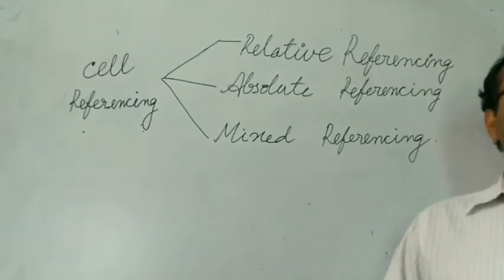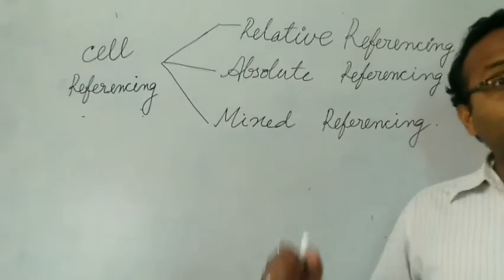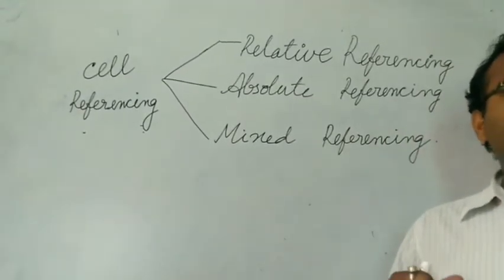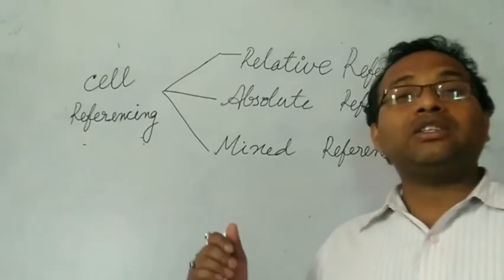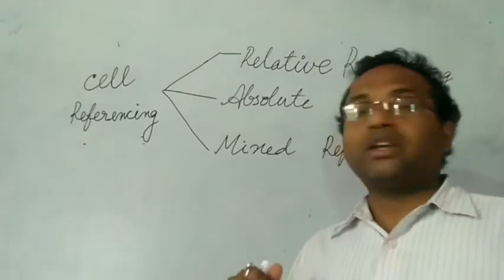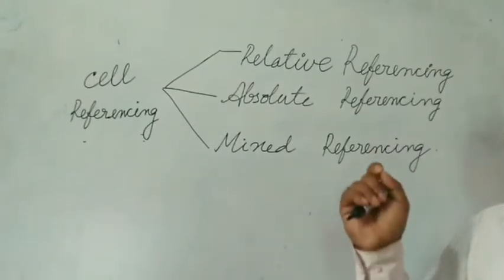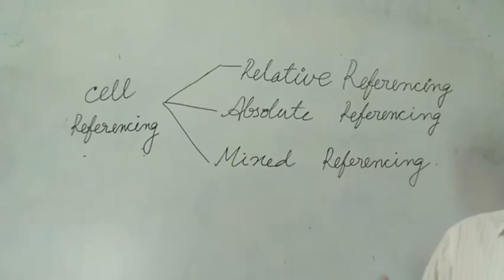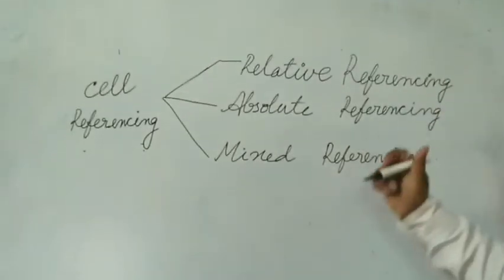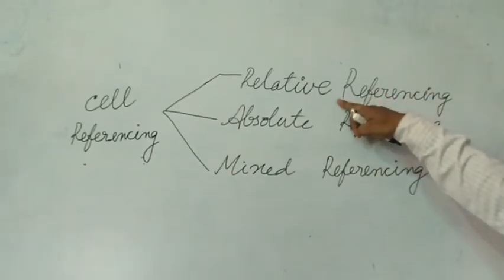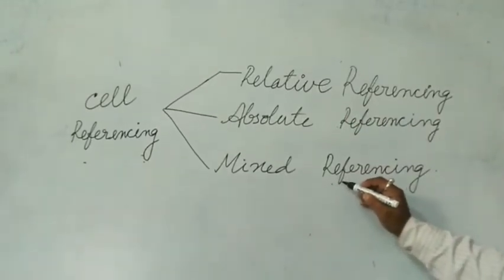Cell referencing is one of the important topics. In MS Excel, calculations can be done automatically. For example, if you write a formula in one cell and drag it with the mouse, the corresponding formula and values will be copied to other cells — saving our time. The cell references are of three types: Relative Referencing, Absolute Referencing, and Mixed Referencing.